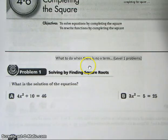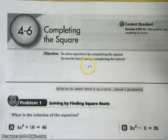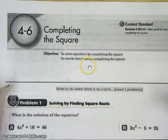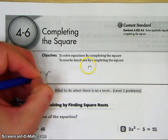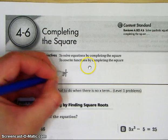In 4-6, you're going to learn how to complete the square. And let's just make sure that we're clear on why you would complete the square. You're going to complete the square if you cannot factor.